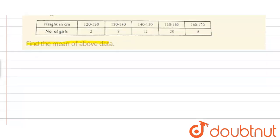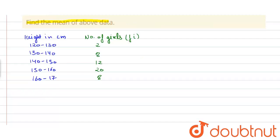To find the mean, first we have to draw this table in which height in centimeters is 120 to 130, 130 to 140, 140 to 150, 150 to 160, and 160 to 170. The number of girls, which is our fi, is 2, 8, 12, 20, and 8.